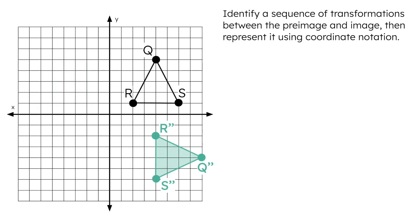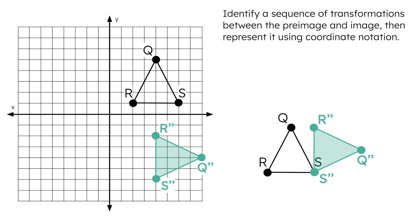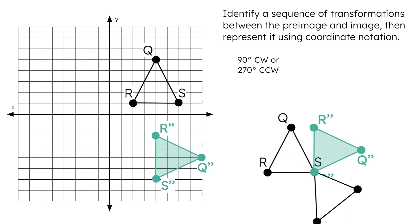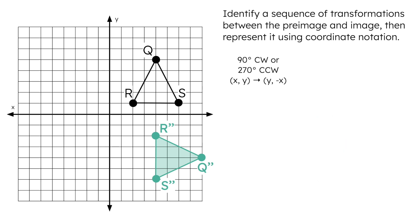Let's look at an example. Comparing the pre-image and image, did the orientation change? Comparing their sides and vertices, we can see that the orientation changed — the image is a turned version of the pre-image. What type of rotation would have made this happen? This pre-image could have turned right once, which is a 90-degree clockwise rotation, or it could have turned left three times — a 270-degree counterclockwise rotation. Here's their coordinate notation. Let's see where exactly this first transformation would take this pre-image. That will help us visualize what we need to do next to get it to its final destination. Go ahead and perform this rotation and sketch in R', S', and Q'. Pause the video now.